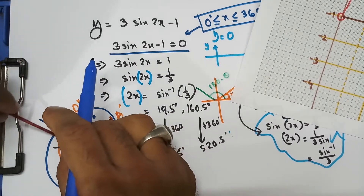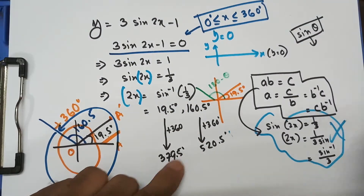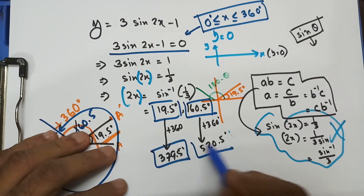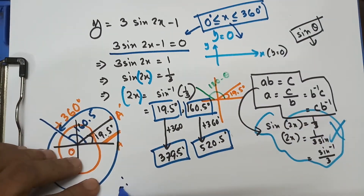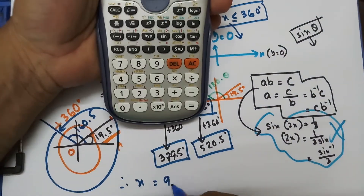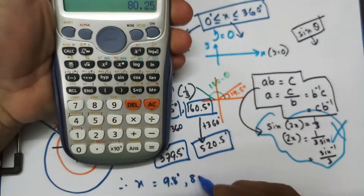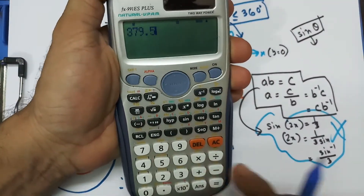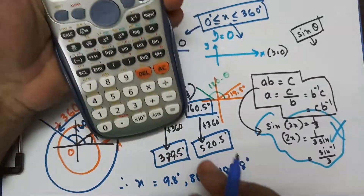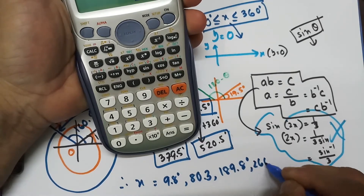Now I divide each value by 2 to find x. 19.5 divided by 2 gives 9.8 degrees. 160.5 divided by 2 gives 80.3 degrees. 379.5 divided by 2 gives 189.8 degrees. And 520.5 divided by 2 gives 260.3 degrees. Those are the four angles for x.